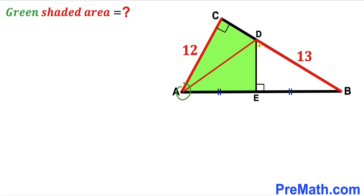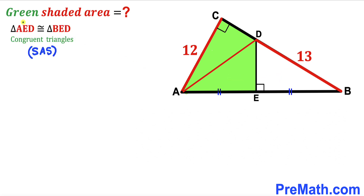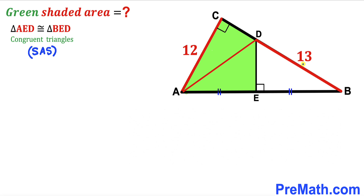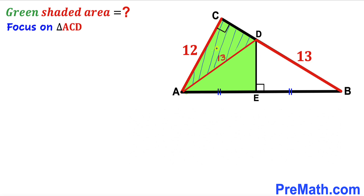Next, I connect point A with point D, giving us two right triangles: triangle AED and triangle BED. These two triangles are congruent according to the Side-Angle-Side congruency theorem — one side is equal, one side is in common, and both angles are 90 degrees. Since they are congruent, AD equals BD, so AD is 13 units.